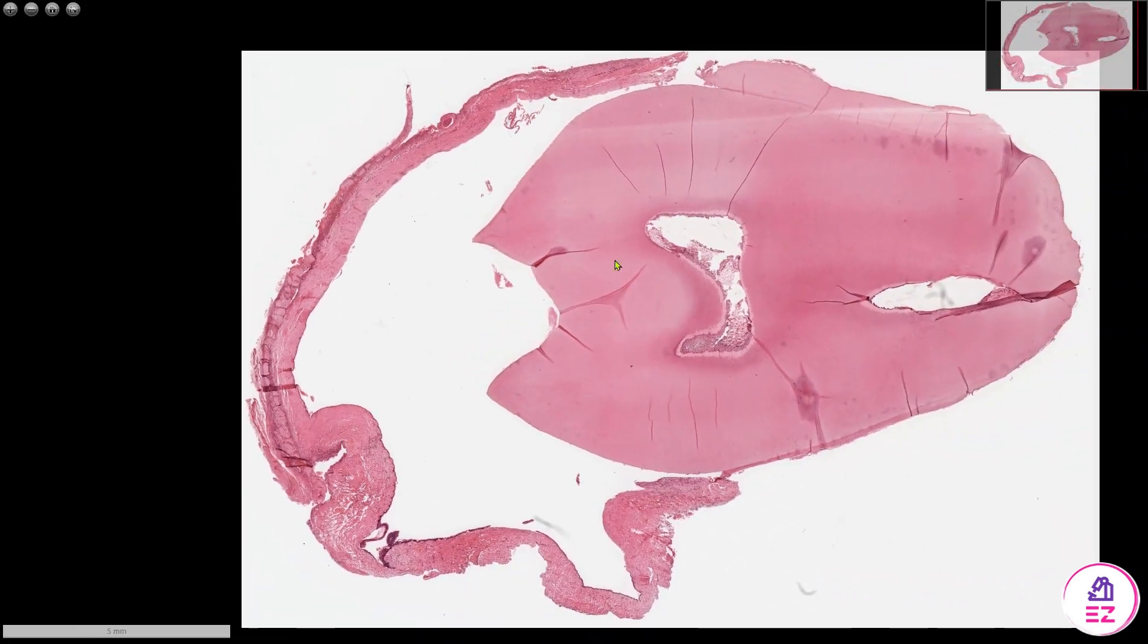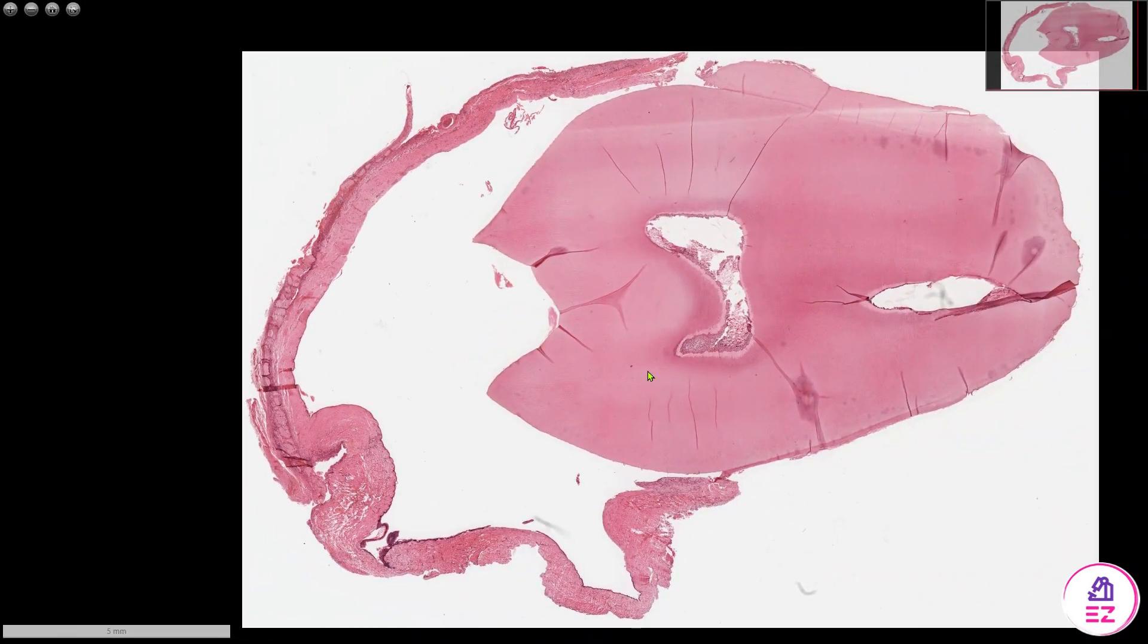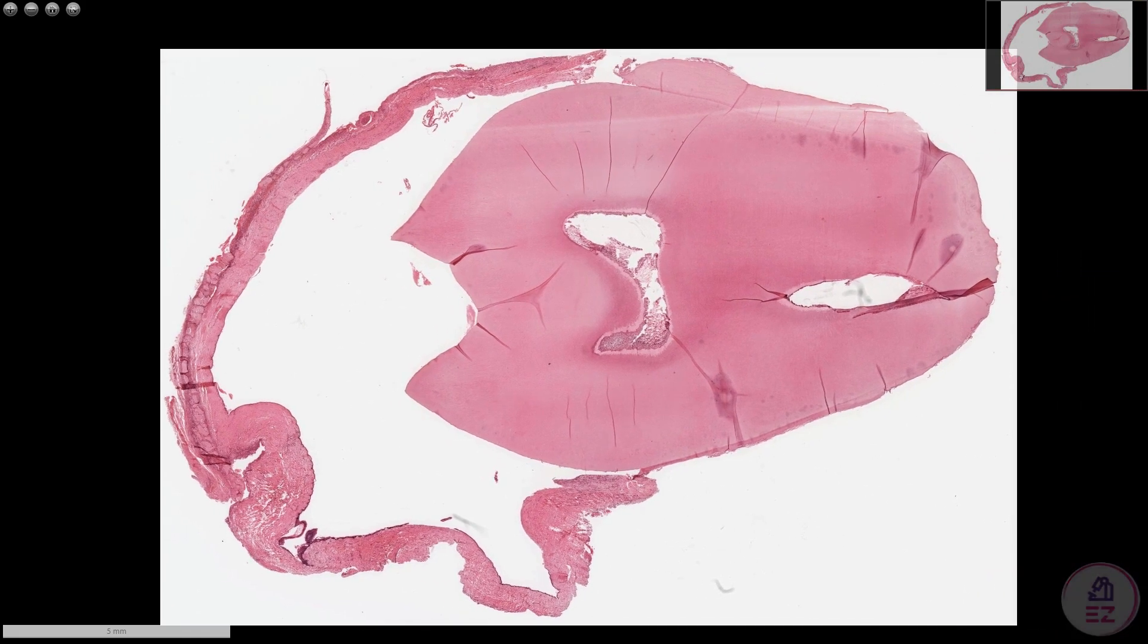The tooth is vital as you'd expect, and that's it in essence. So this was an example of a dentigerous cyst. If you enjoyed this video, please don't forget to like and subscribe to our channel, Path Made Easy. Thank you.